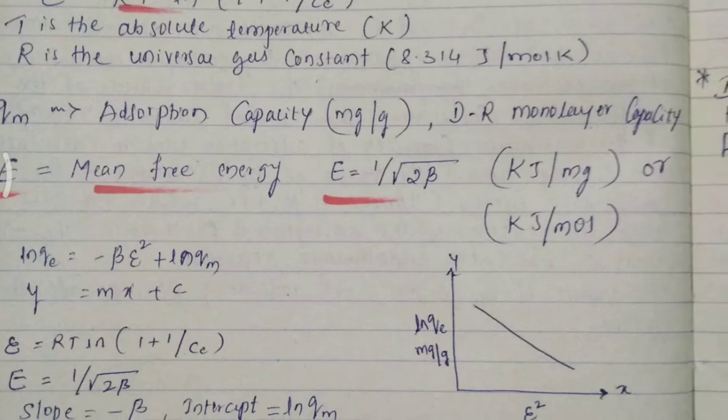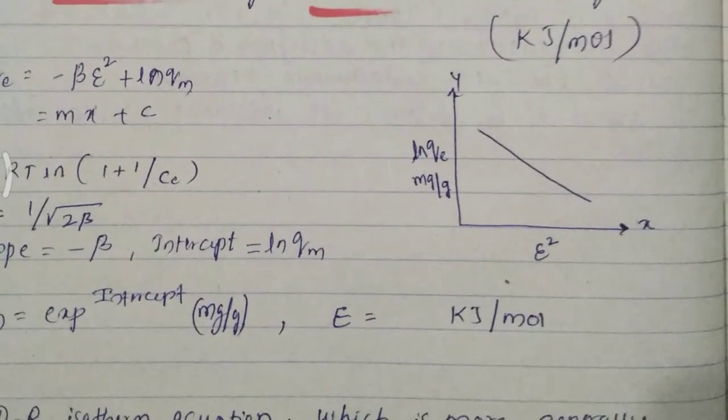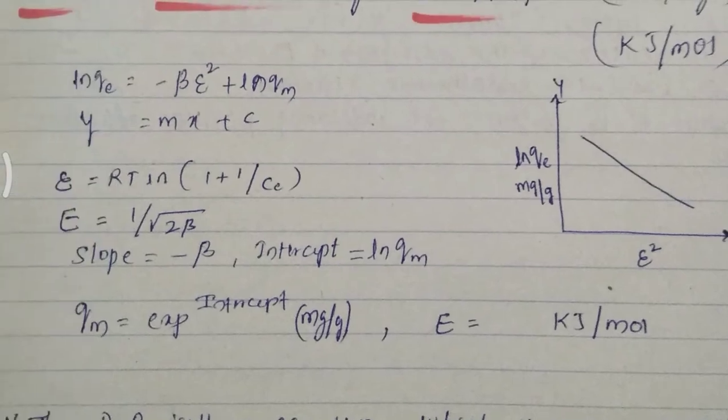You need to generate kilojoule per milligram or kilojoule per mole. So I draw a graph ln q versus epsilon square so you can find out the slope and intercept.